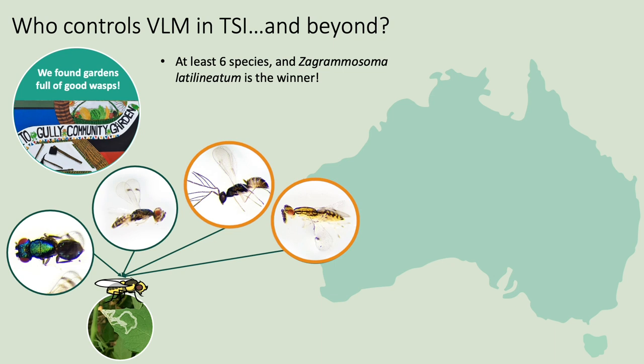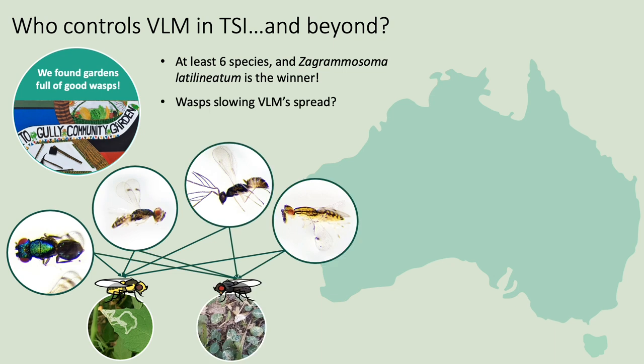Together, these wasps were killing up to 80% of the vegetable leaf miner flies in some areas we were searching. This is an impressive predator community for such a newly established pest, and we think this is largely thanks to the presence of a native leaf miner fly that had already been maintaining this community of generalist wasps. These wasps are not fussy eaters and were more than happy to jump to this new fly upon its arrival. Heavy parasitism by these wasps has certainly played a large role in slowing the vegetable leaf miner's natural spread south. We found that this buffer of wasps extends all the way down the Cape York Peninsula, with native leaf miner flies maintaining healthy wasp populations nearly everywhere we looked.